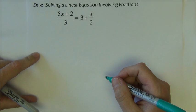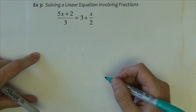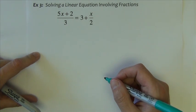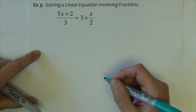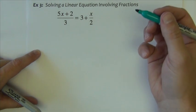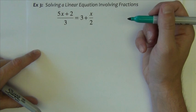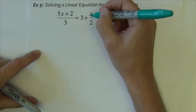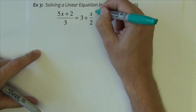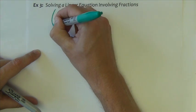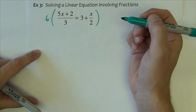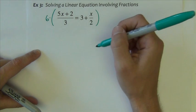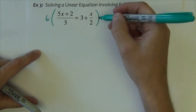This next example involves a linear equation with a fraction, or in this case multiple fractions. I'm going to begin by multiplying the entire equation by the common denominator. The common denominator is 6, and I'm going to multiply everything by 6. Let me just write out what that looks like first.